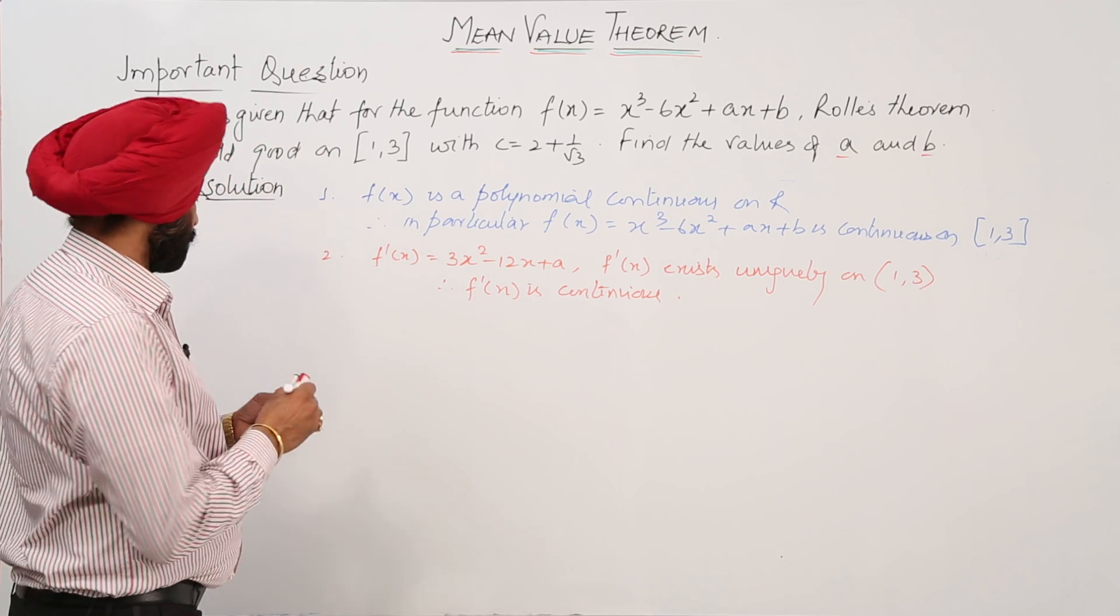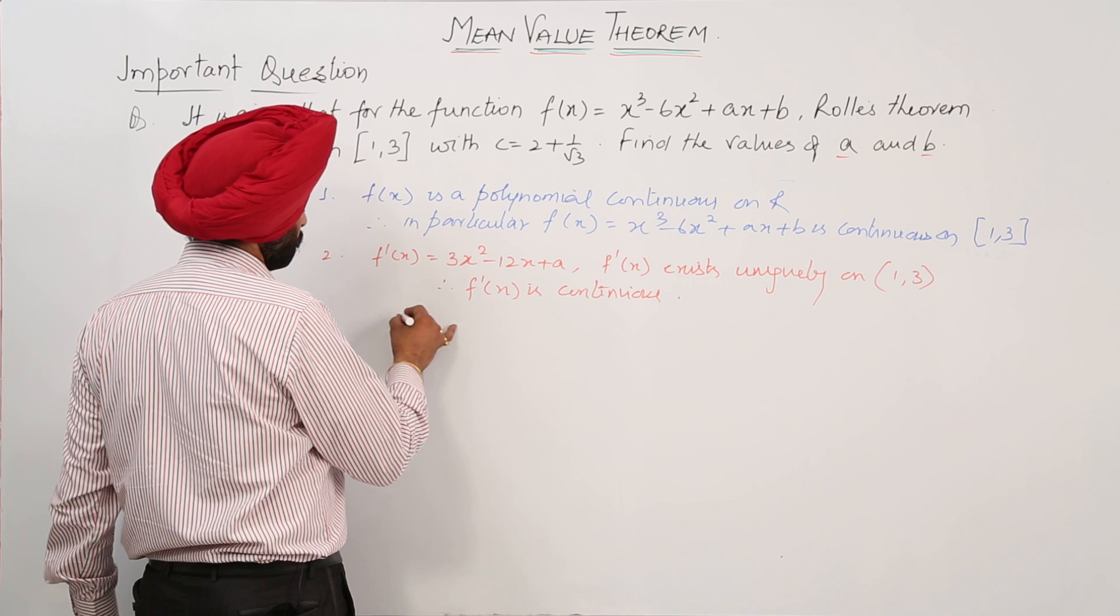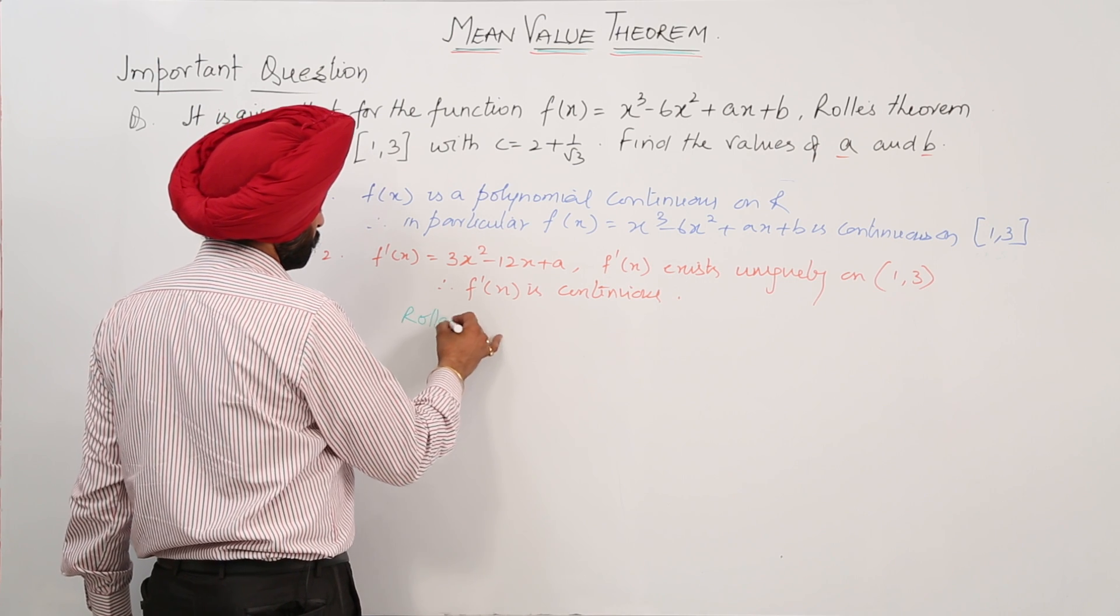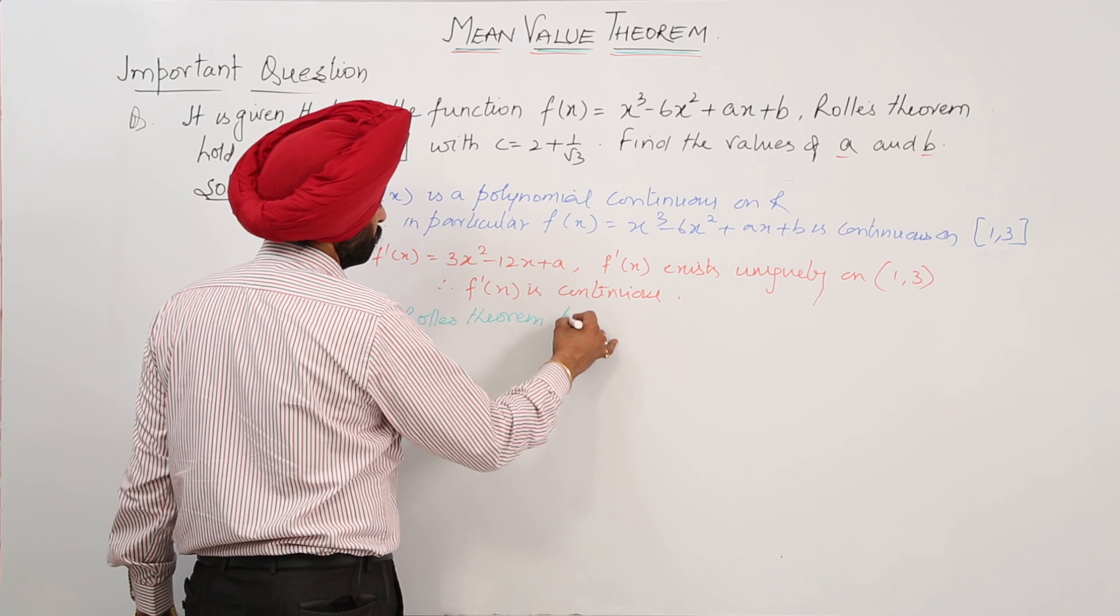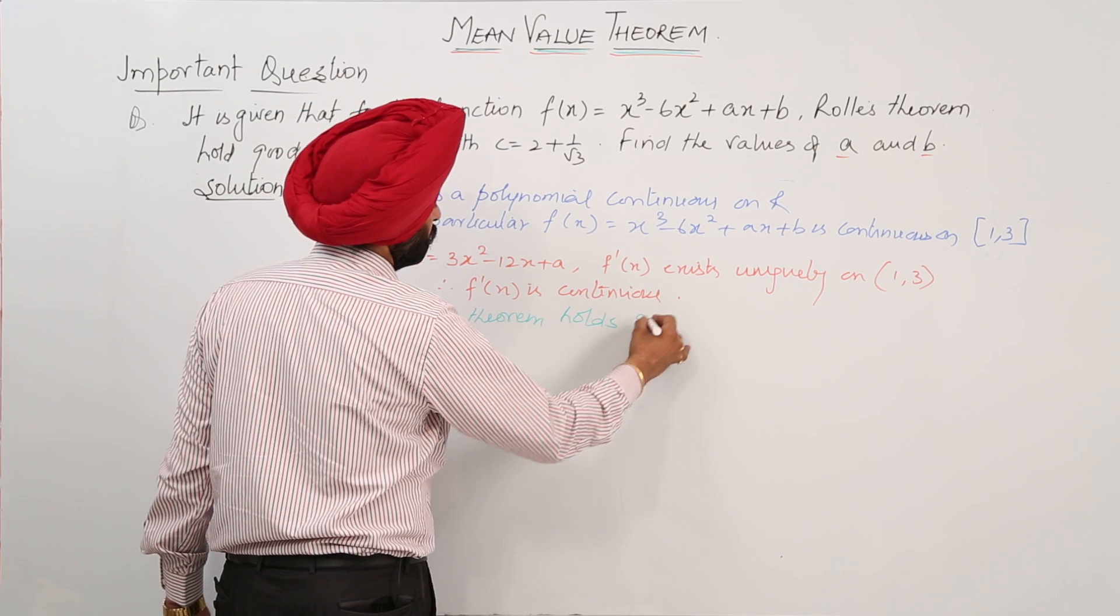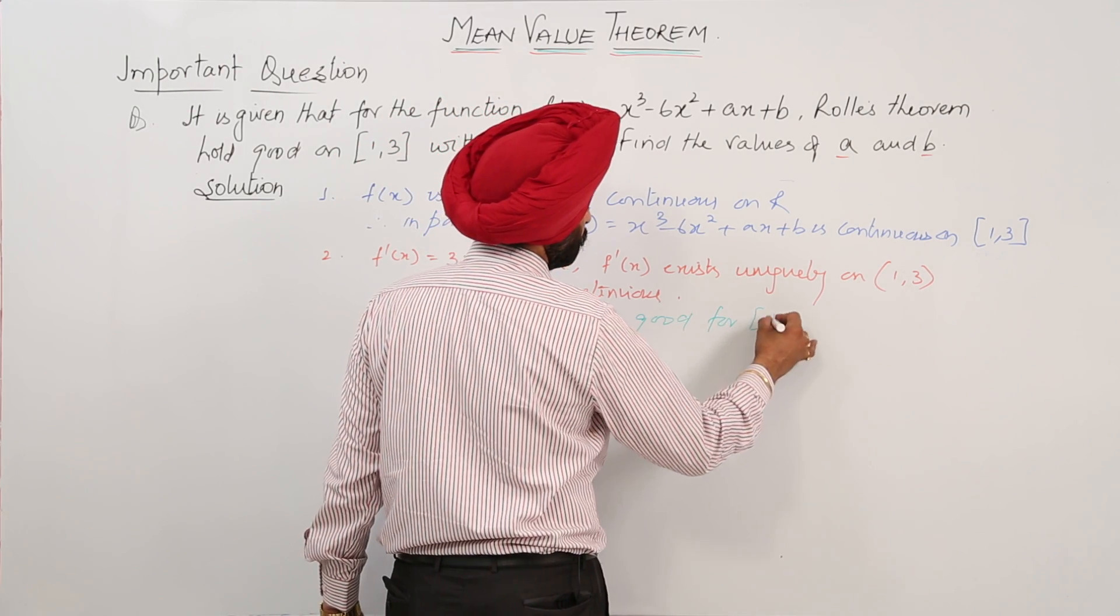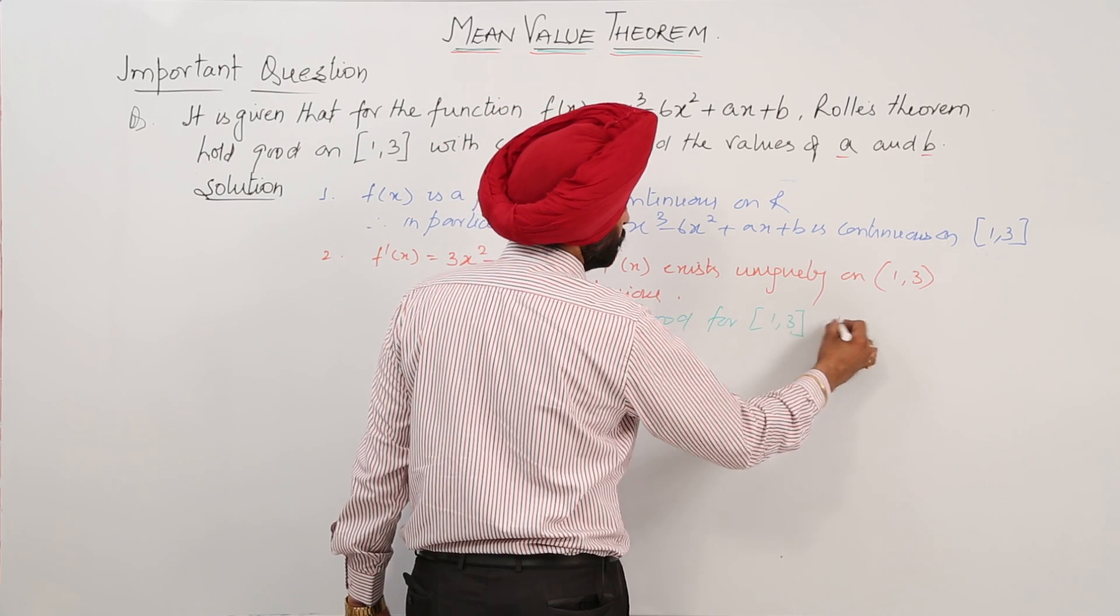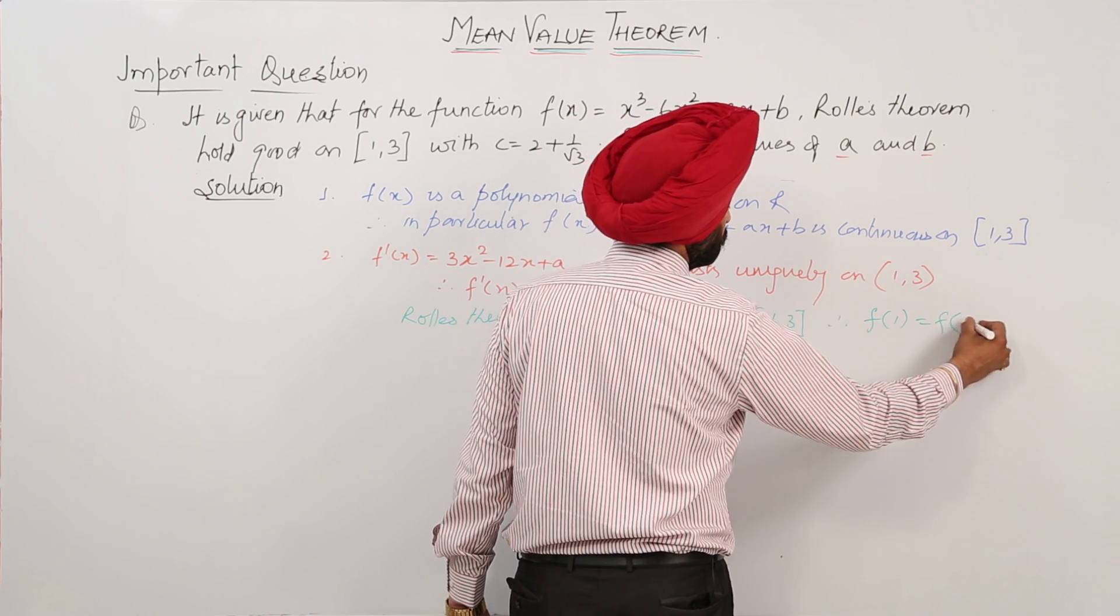Now, step 3: Rolle's theorem holds good for [1, 3]. Therefore, we can say f(1) = f(3).